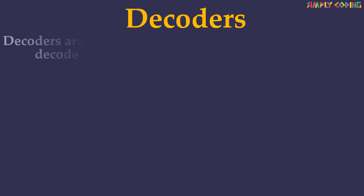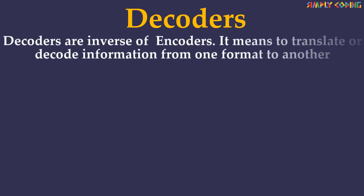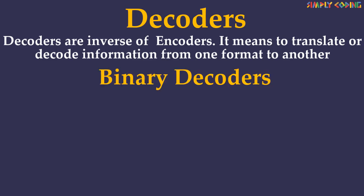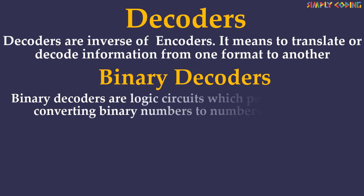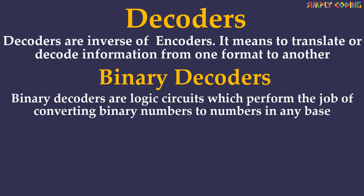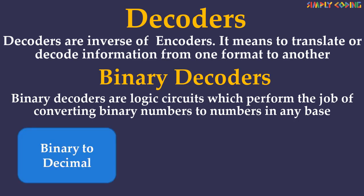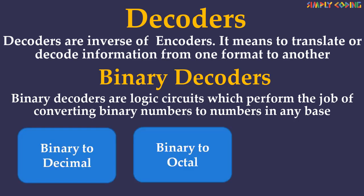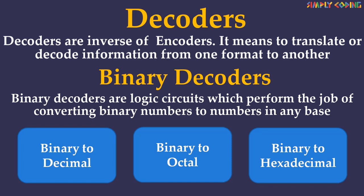Next we will take a look at decoders, which are the inverse of encoders. Decoders translate or decode coded information from one format into another. What we are going to see are binary decoders, which are logic circuits that perform the job of converting binary numbers to a number in any base, like binary to decimal, binary to octal, or binary to hexadecimal. Let's look at each one of them.